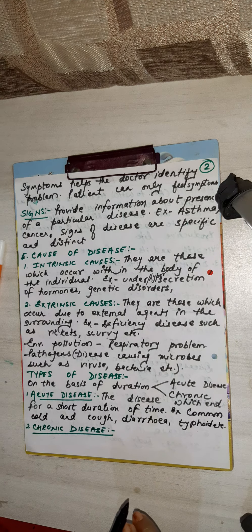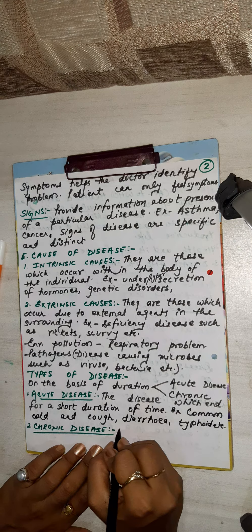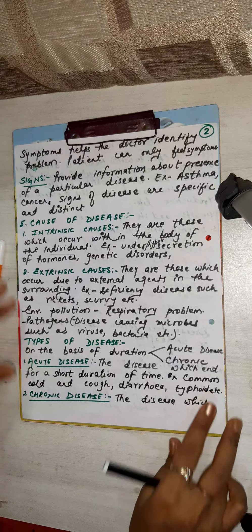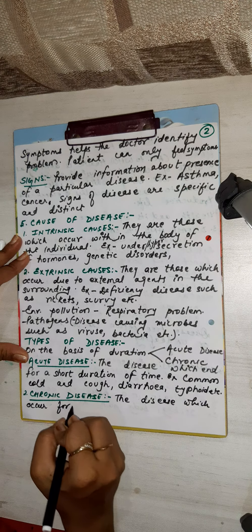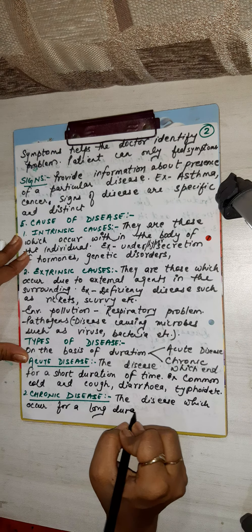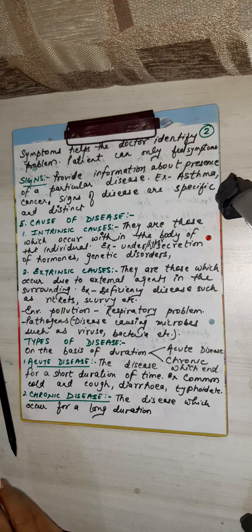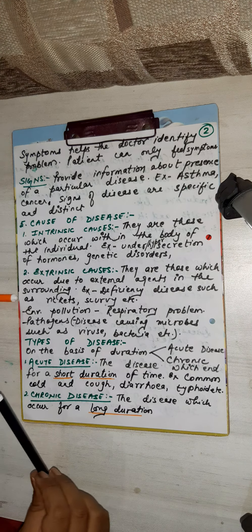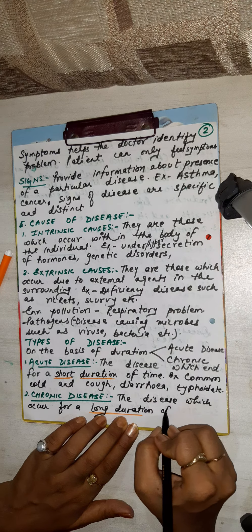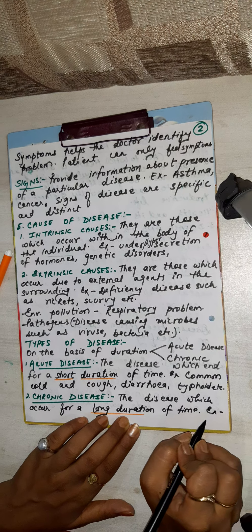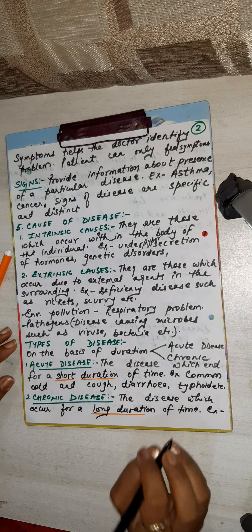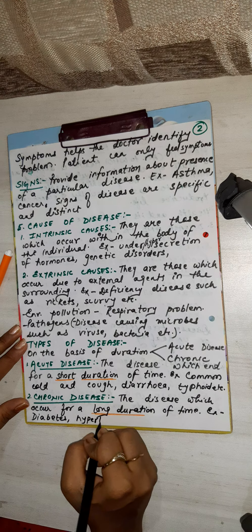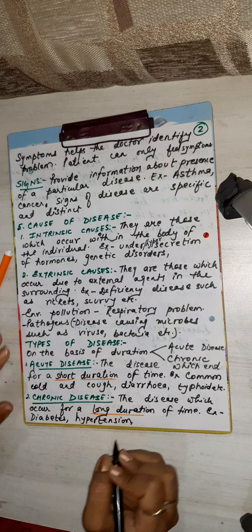Chronic disease means long duration. The disease which occurs over a long duration. Examples are diabetes and hypertension.